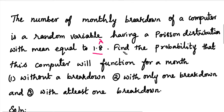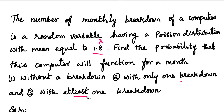What is the probability that this computer will function for a month without a breakdown? Let's solve this Poisson distribution problem. First, let's solve the Poisson distribution and solve the problem.